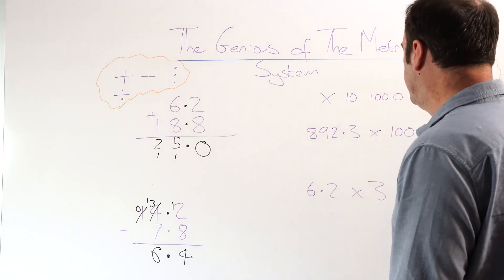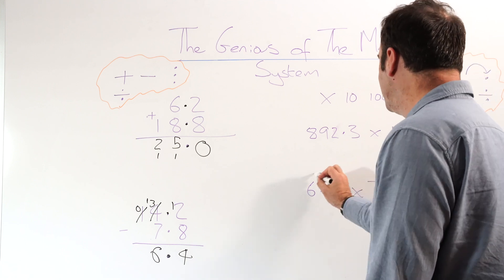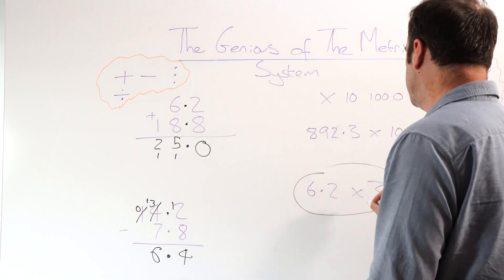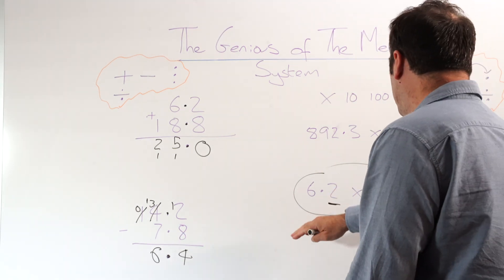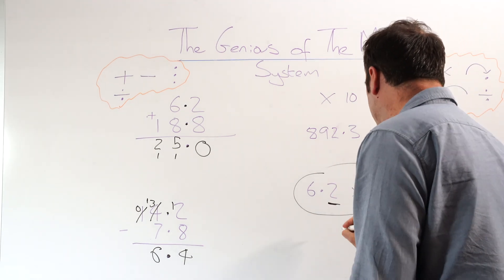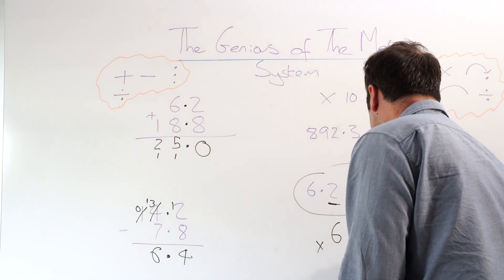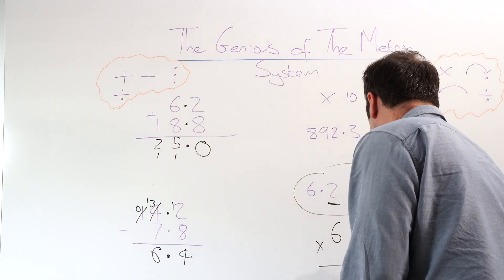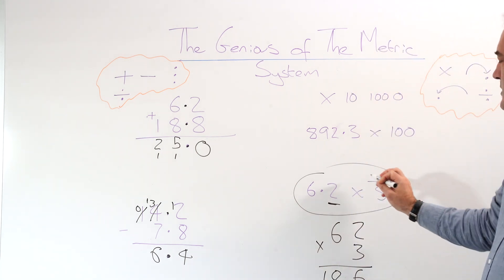So we write the question out first. 6.2 times 3. We underline anything in the whole question that's to the right of a dot. In this case, we've got one number here, number 2. Then we go ahead and ignore the decimal point. We do it like a regular column multiplication.